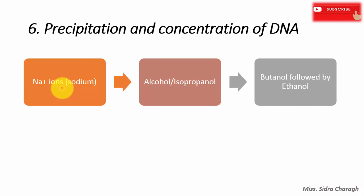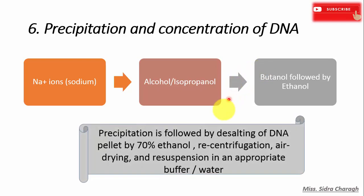The sixth step is precipitation and concentration of DNA. Sodium acetate is used to neutralize the negative charge on DNA molecules, making them less water-soluble and more stable. Alcohol — isopropanol or ethanol — is then added, causing precipitation of DNA from the aqueous solution since DNA does not dissolve in alcohol. This is followed by desalting of the DNA pellet with 70% ethanol, centrifugation, air drying, and resuspension of the DNA pellet in an appropriate TE buffer or water.